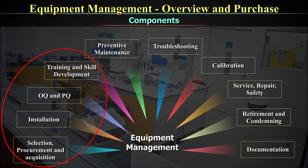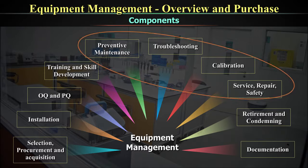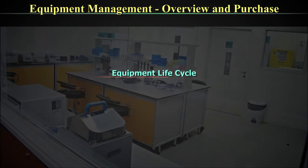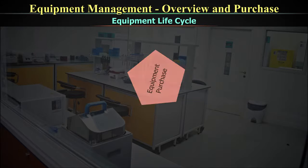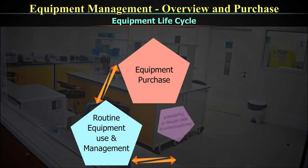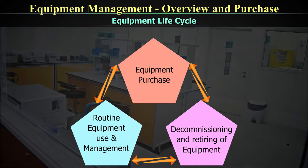As a recap, the first four components fall under purchase and installation, the next four under routine use, and the last covers retirement and condemnation, with documentation applying throughout. Broadly, the equipment cycle involves purchase, equipment use and management, and decommissioning and retiring. Before going into the details of each aspect, let's get a broad overview of these three, noting that each contains different aspects of equipment management.